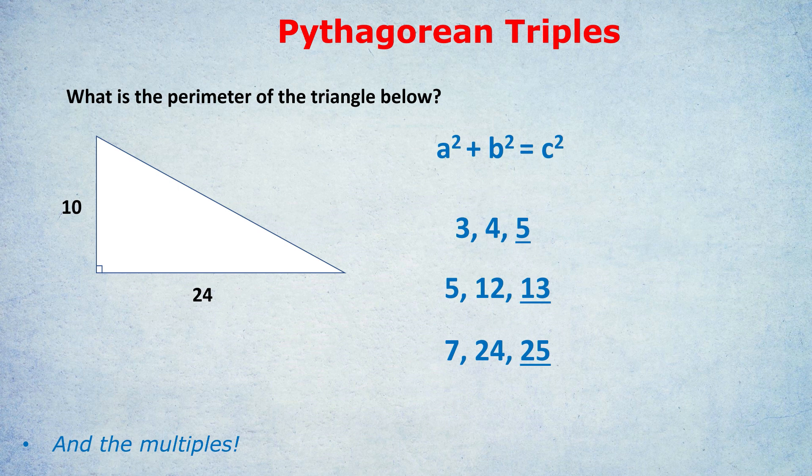You can also have multiples of these triples. Take this triangle — the question is: what is the perimeter? We have two sides, 10 and 24, and we'd rather not use a calculator. But 10 and 24 aren't directly in our triples. However, you might notice that 10 and 24 use the second triple, 5-12-13, except doubled: 5 doubles to 10 and 12 doubles to 24, meaning the hypotenuse is just 13 doubled — 26.